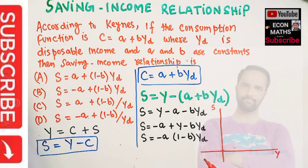Then, this is the savings function here. The intercept of the savings function is -A. Let us say this is -A.